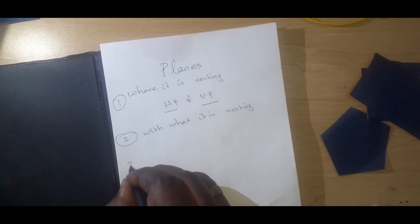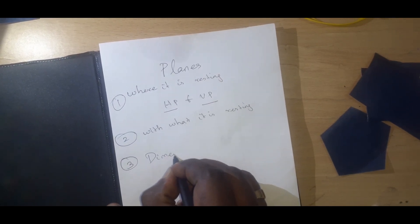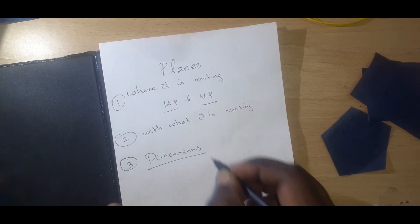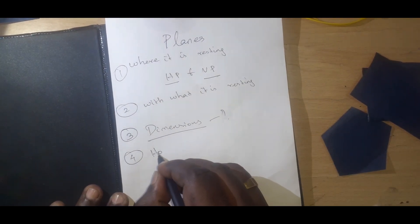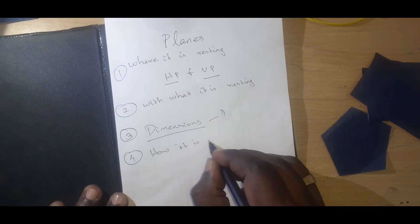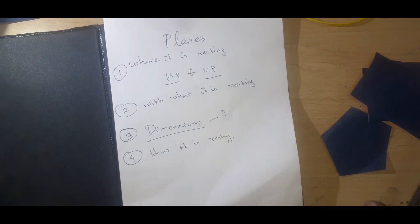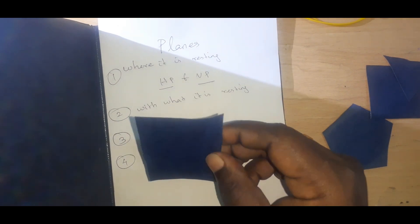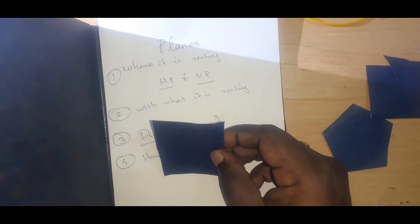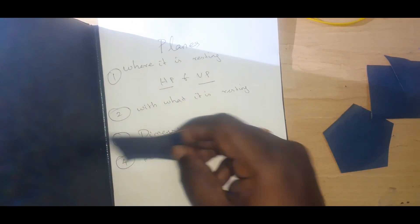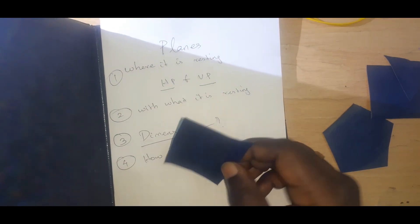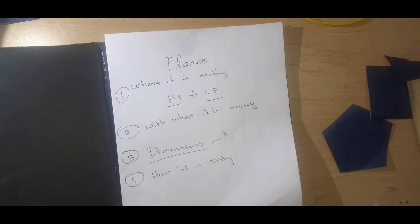Next, the dimensions of the plane will be given and can be clearly drawn. Next: how is it resting? If it is resting with one of the edges perpendicular to VP, or the same edge is inclined to VP, it can be easily positioned. These are the basic questions we need to ask. After asking these only, we can enter into the problem.